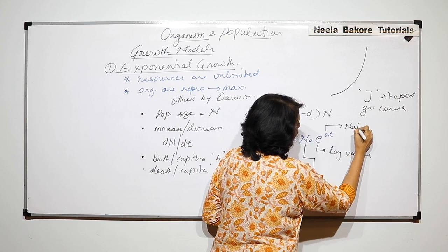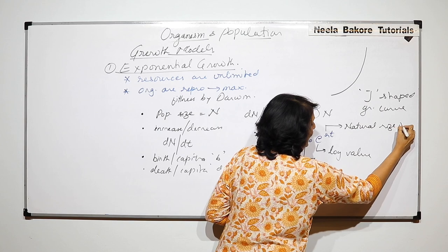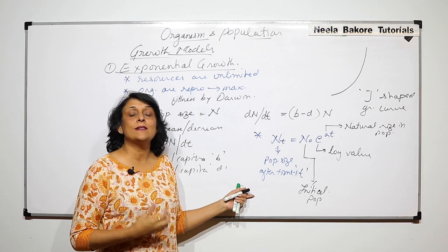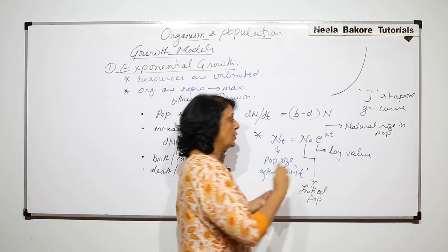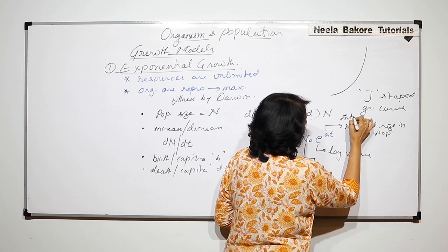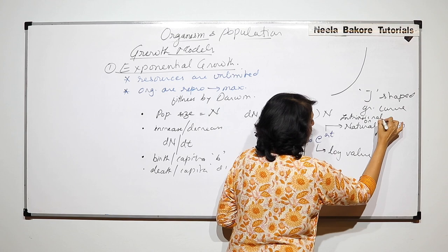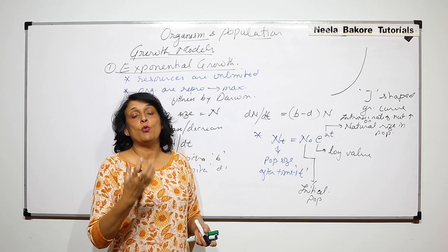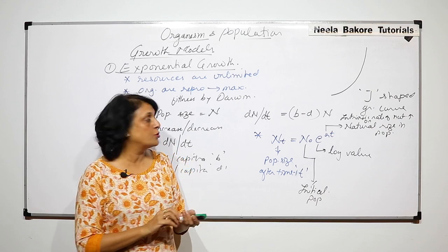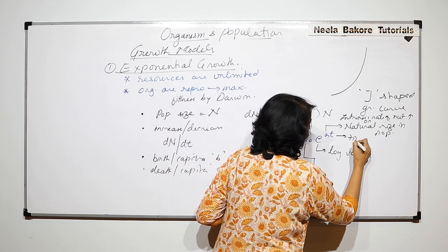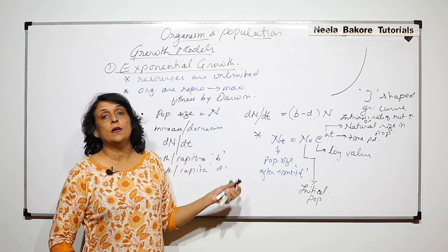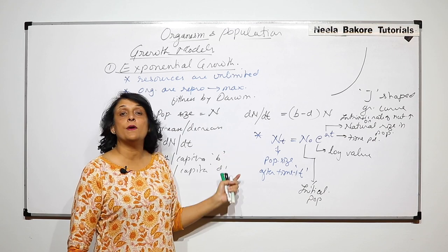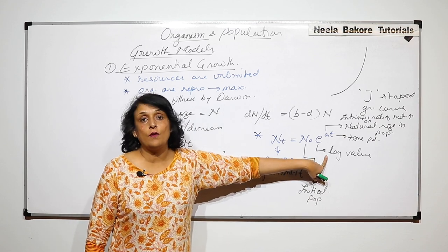Here, e is the log value, and r represents what Darwin was talking about — the reproductive potential. It is the natural rise in population due to reproductive potential, also known as the intrinsic rate of natural increase. It represents the fitness, meaning what reproductive potential the organism is able to use. t is the time period in which we want to find out the change in population size.